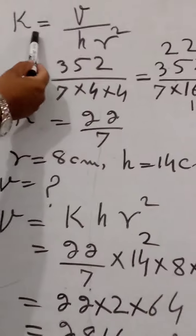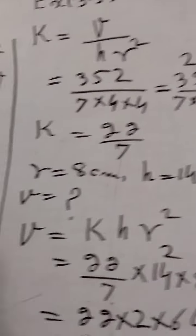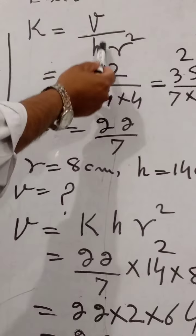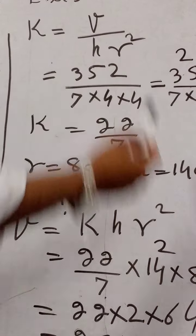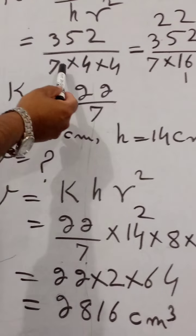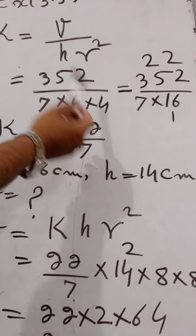From this, we will first find the value of K. K is equal to V divided by H R square. Volume is 352, H is 7, R is 4, 4 square, 4 into 4.